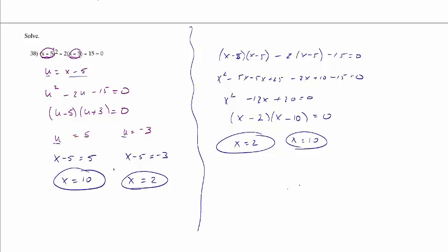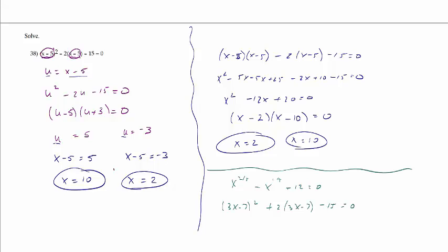Like I said, this particular example, it really wasn't a whole lot of work either way. But now if I have something like x to the 2 fifths minus x to the 1 fifth minus 12 equals 0, substitution works pretty well. Or if I have 3x minus 7 squared plus 2 times 3x minus 7 minus 15 equals 0, again, substitution would work really nicely for this one.